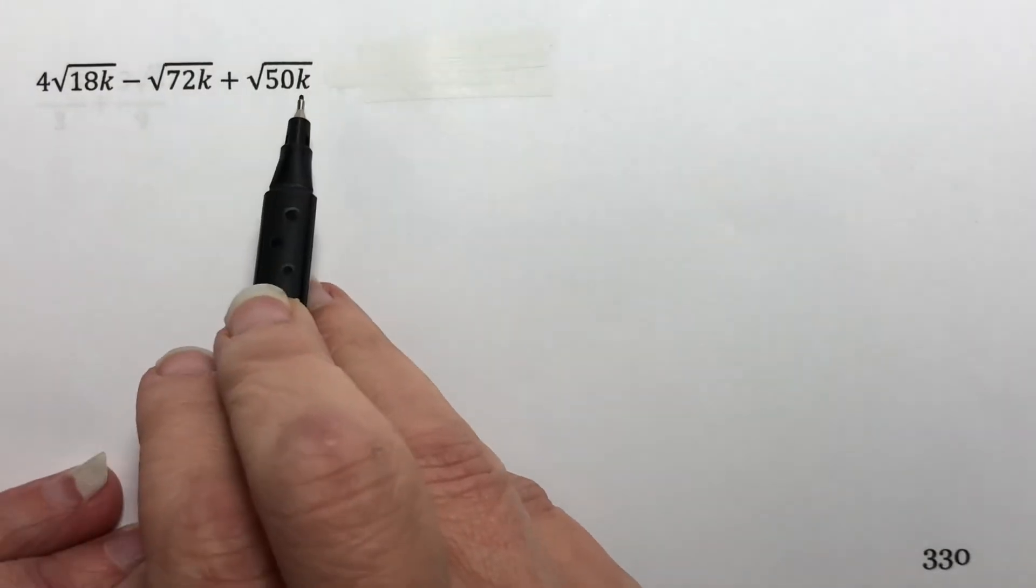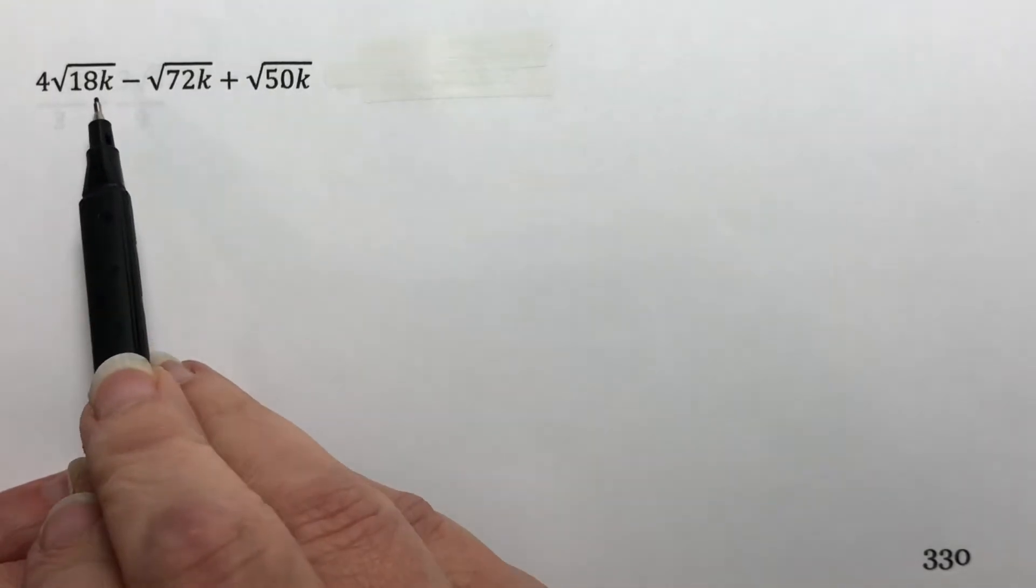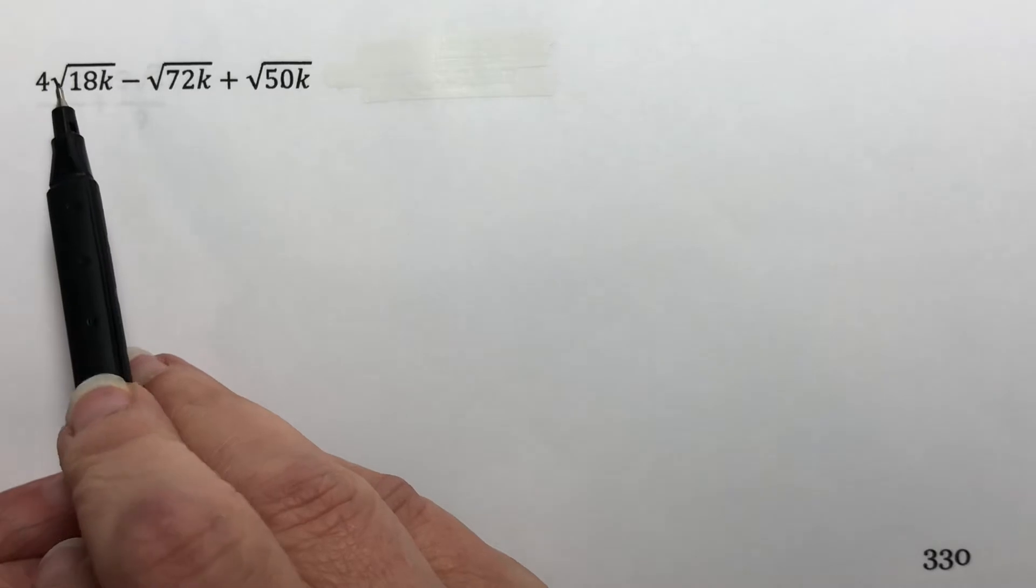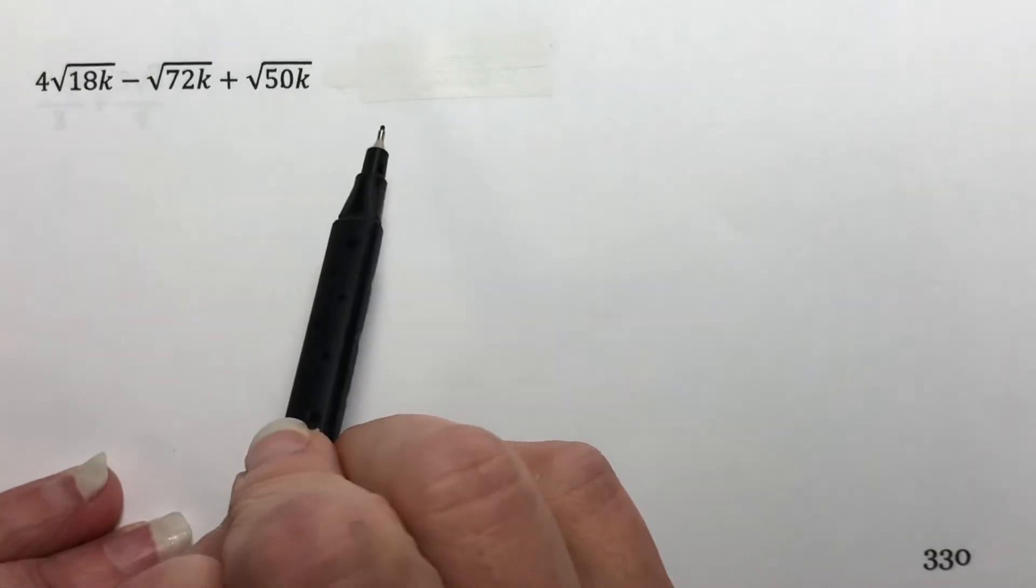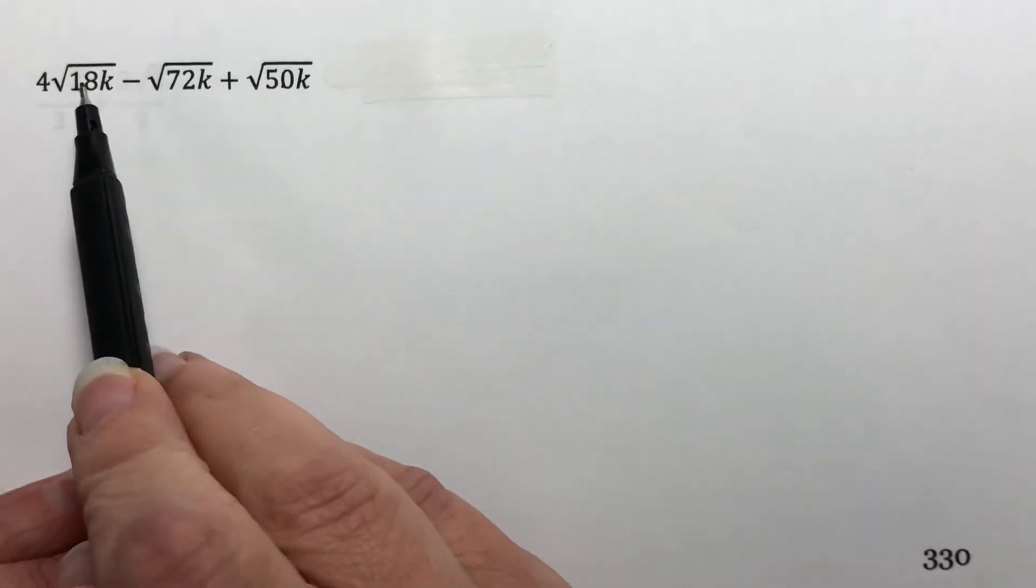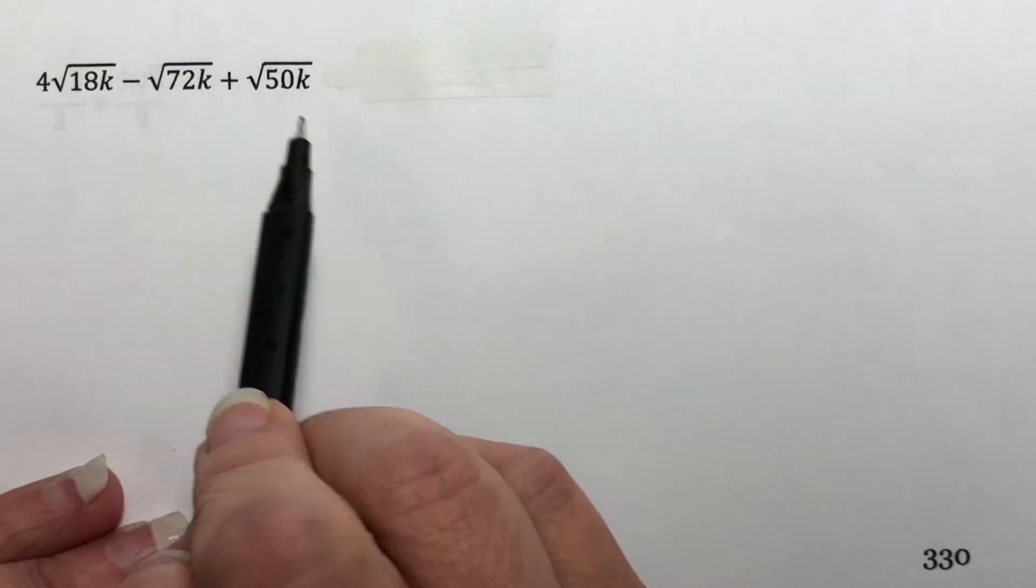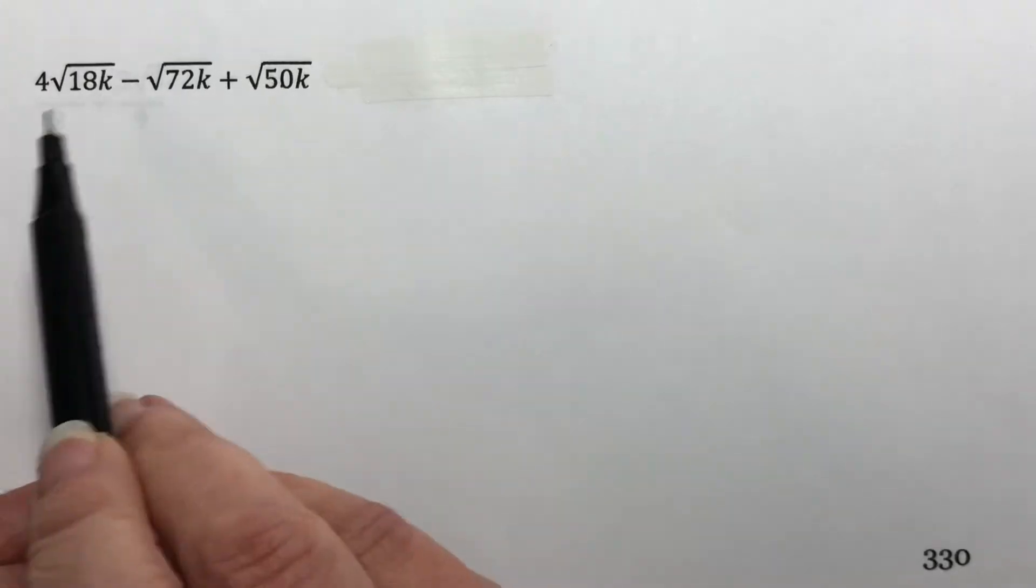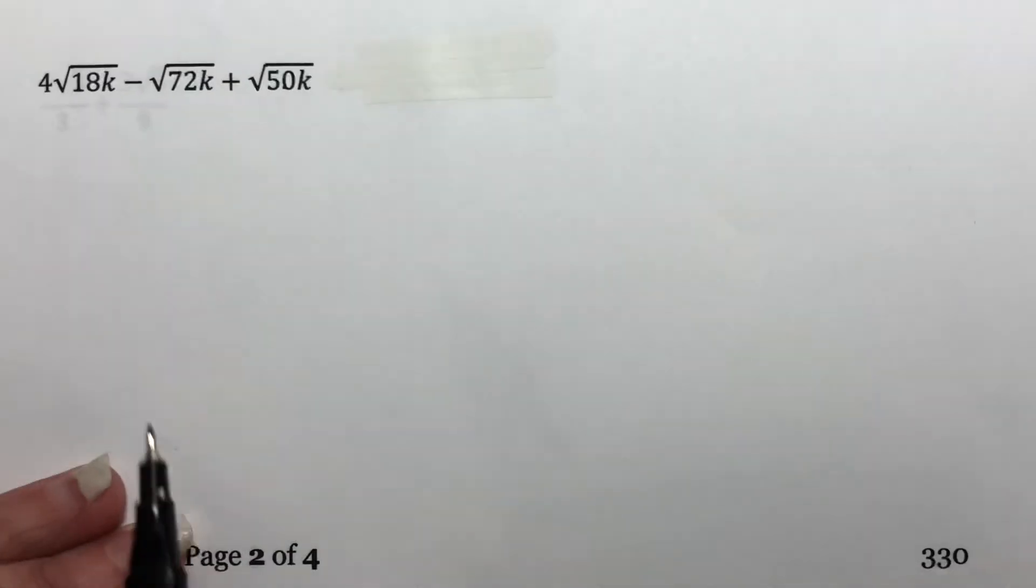First of all, we have a variable in each one, and we know how to deal with variables on the inside. We know how to simplify those. When we get to where we are combining these, we must have exactly the same variables in exactly the same places in order to be able to combine them. So that's in addition to needing exactly the same square roots.